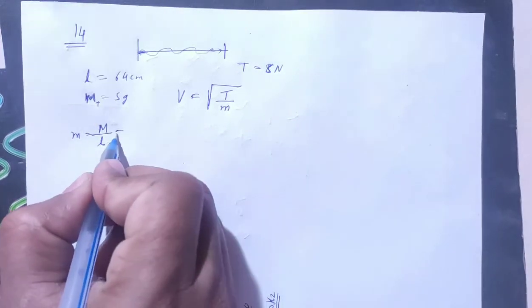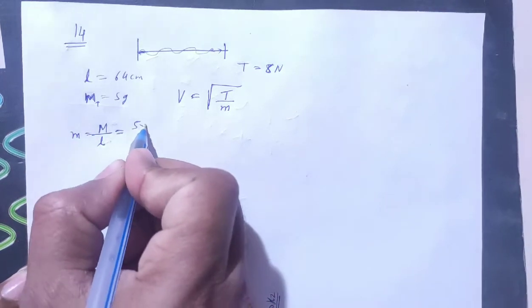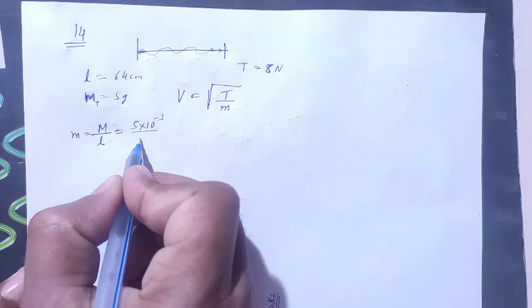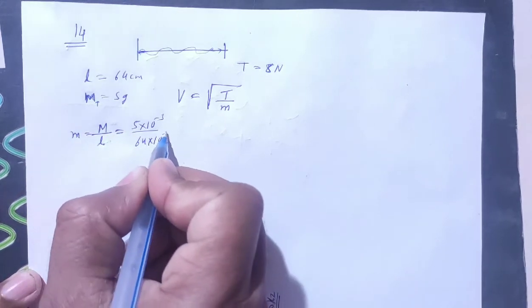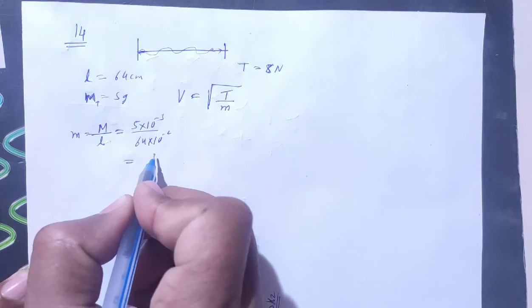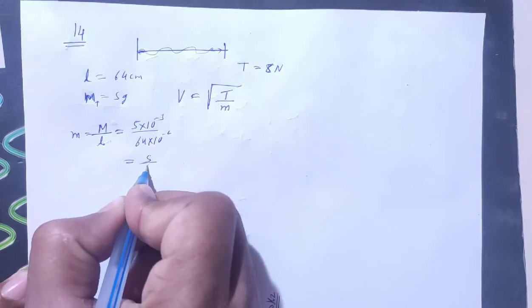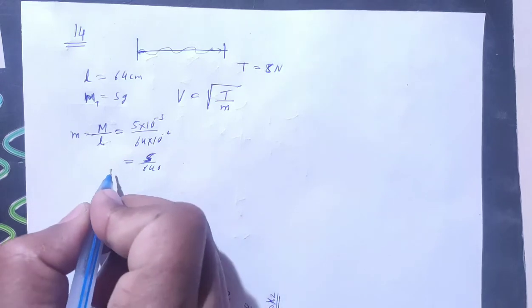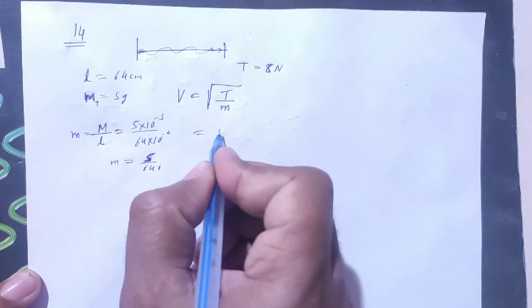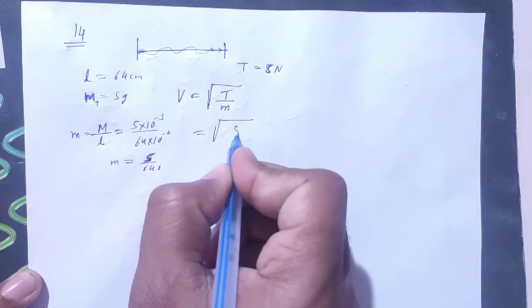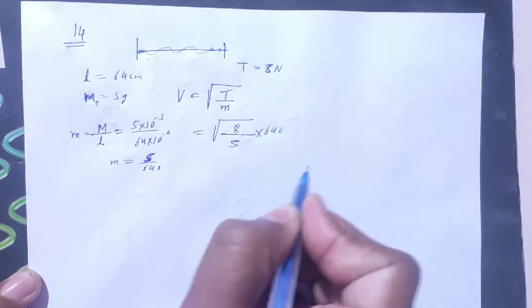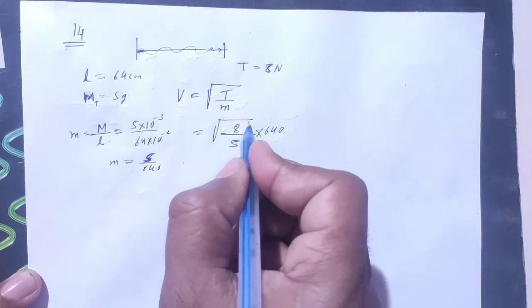Mass per unit length is, what is total mass is 5 gram meaning 5 into 10 to the minus 3 kg and length in meter will be 64 into 10 to the minus 2. Then answer will be 5 by 640. What is m? Value put here is 8 Newton. M is the total mass per unit length is 5 by 640.